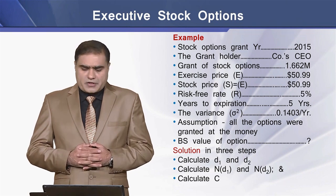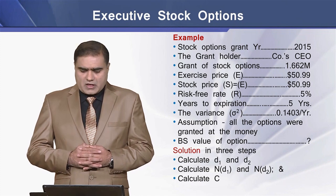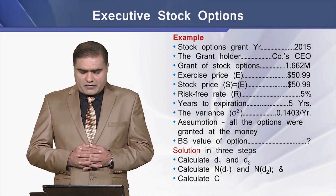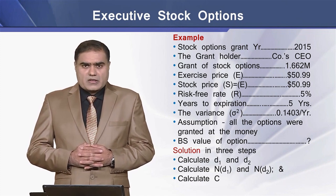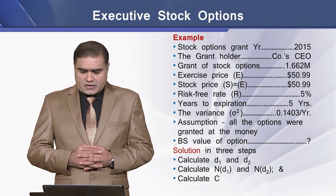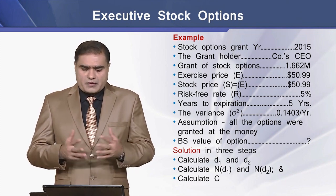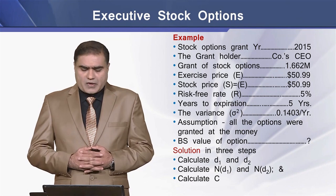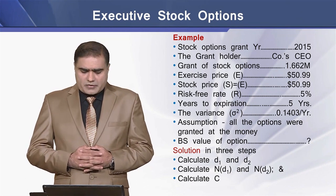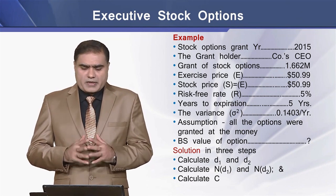The risk-free rate of interest is 5% and the years to expiry is 5 years. The variance or standard deviation of the return on assets of the firm is equal to $0.1403 million per year. We assume that all the options were granted at the money.